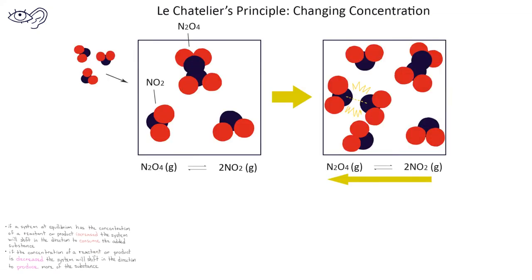This image demonstrates Le Chatelier's principle when it deals with changing the concentration of a reactant or product. We represent the reaction of N2O4 producing two NO2 molecules. In the first square, we see that we have an equilibrium concentration of NO2 and N2O4, and then we add some NO2 molecules to the system. Once the NO2 is added, the system is no longer at equilibrium.